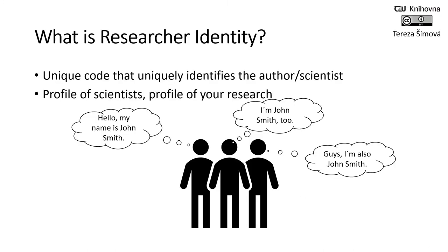What is a research identity? A research ID is a unique persistent identification number that identifies you as a researcher and ensures links between you and your publications, activities, or grants. Some research IDs are associated with commercial publishers or databases, while others are independent and non-commercial.